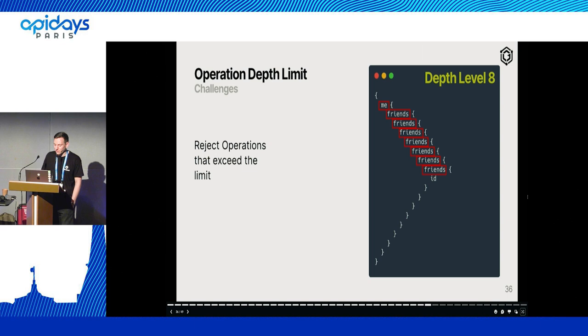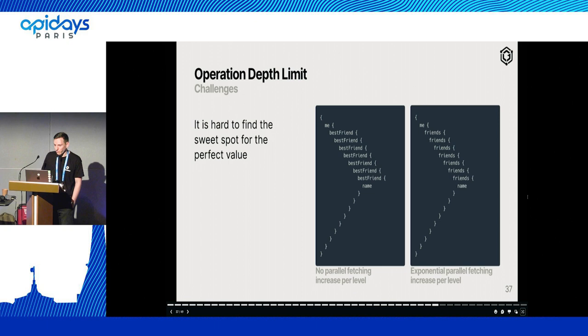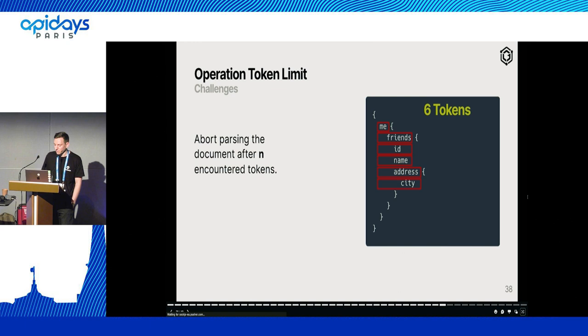A quick win here would be to apply a depth limit — say if the query has a depth of 8 or greater, just reject it and not execute it at all. But it is hard to find a sweet spot, because we don't know how expensive a field is before executing it. For example, a best_friend field would only always resolve to one more entity, where a friends field would always resolve to many entities. So just having a depth limit as an arbitrary number might not be a great idea. Another thing we could do is look at the tokens in a GraphQL query and say if there's more than N tokens, reject the query — though that also has similar drawbacks.